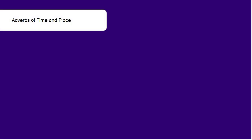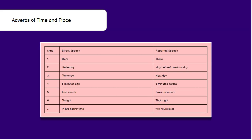Coming to the next change — adverbs of time and place. In direct speech, 'here' will change to 'there' in reported speech. 'Yesterday' will change to 'the day before' or 'the previous day.' 'Tomorrow' will change to 'the next day.' 'Five minutes ago' will change to 'five minutes before.' 'Last month' will change to 'previous month.' 'Tonight' will change to 'that night,' and 'in two hours time' will change to 'two hours later.'